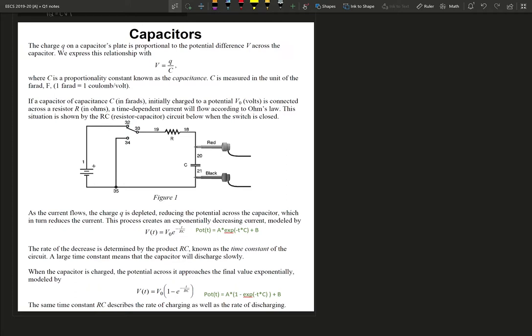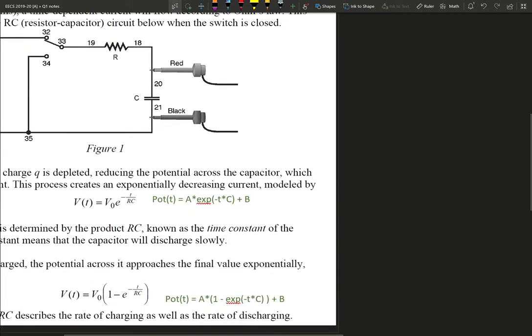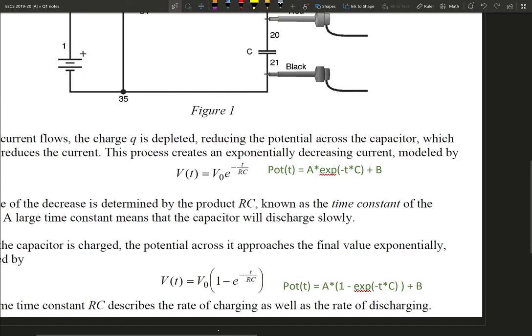So in Logger Pro you had these curve fit equations. They don't look like this, they look like a string of text. So you have Pot as a function of t equals A asterisk asterisk exp, and then in parentheses you got minus t asterisk C plus B.